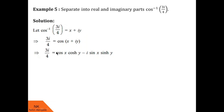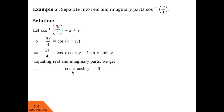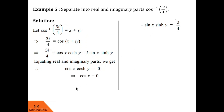In my last video we saw this separation; the link is given in the description box. Now let us compare both sides for real and imaginary parts. The real part on the LHS is 0, and the real part on the RHS is cos(x)·cosh(y), so cos(x)·cosh(y) = 0. The imaginary part on the LHS is 3/4, and on the RHS it is −sin(x)·sinh(y), so −sin(x)·sinh(y) = 3/4.